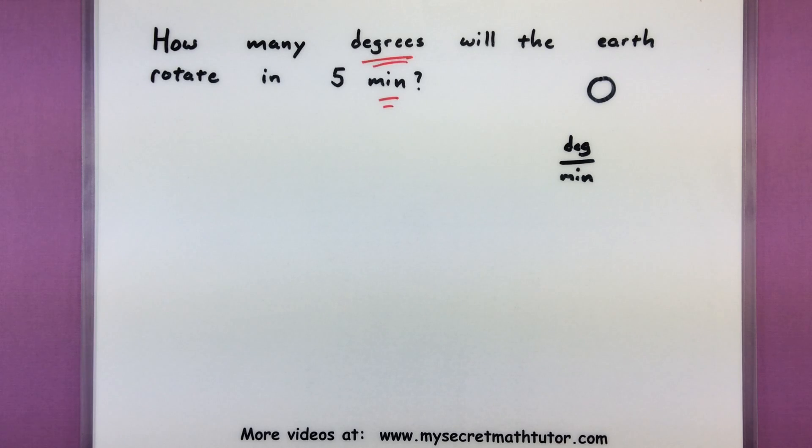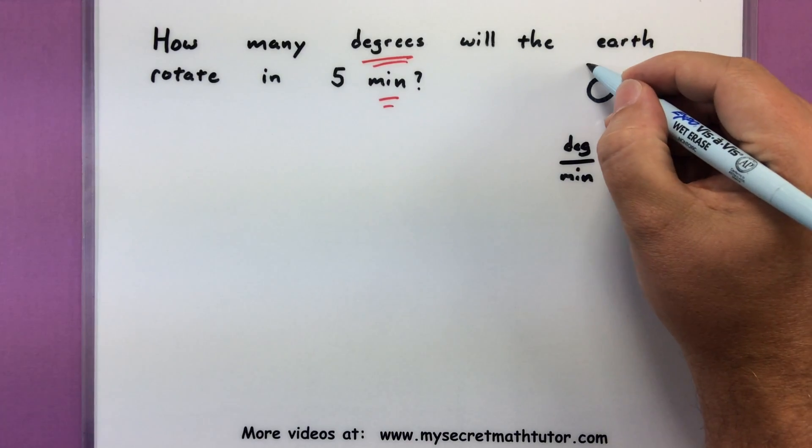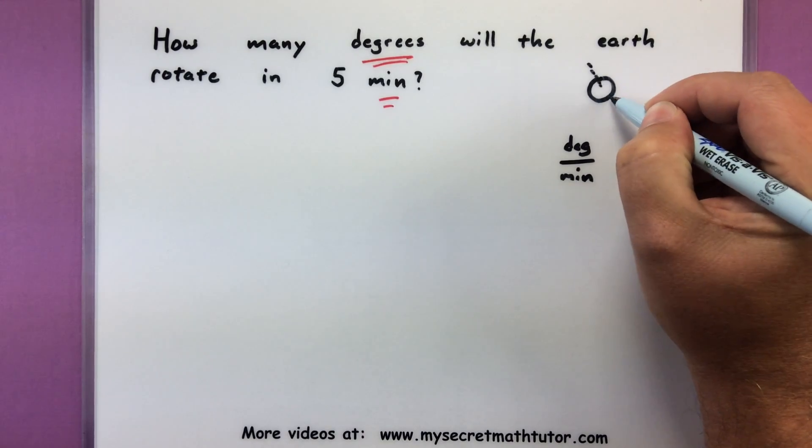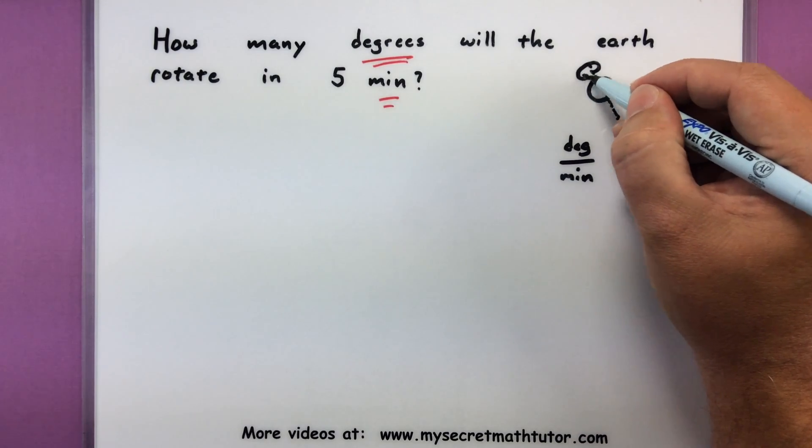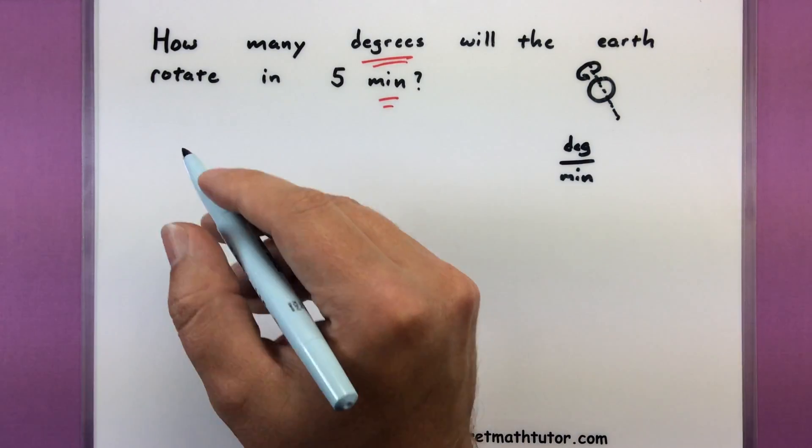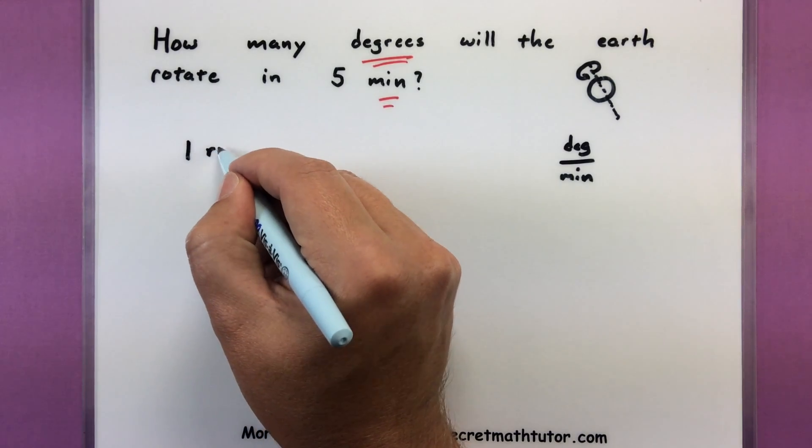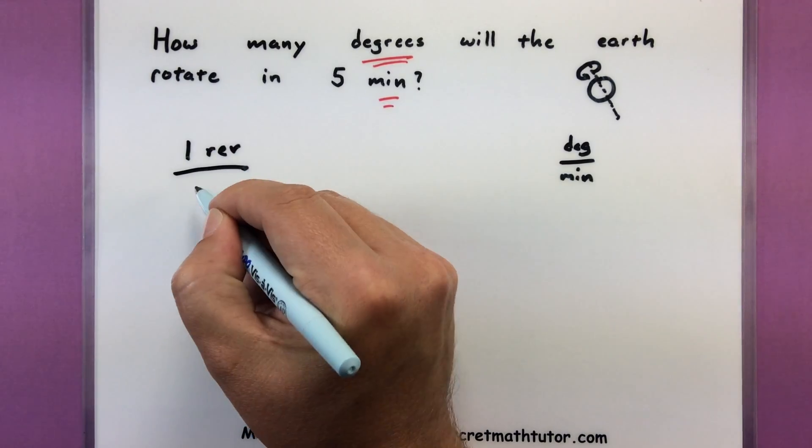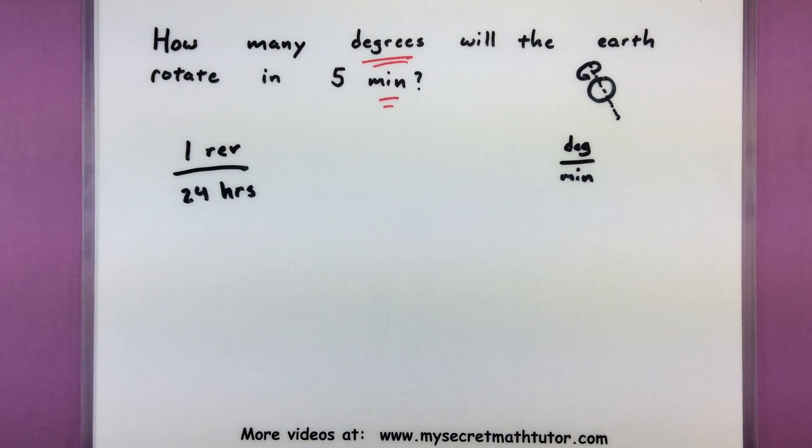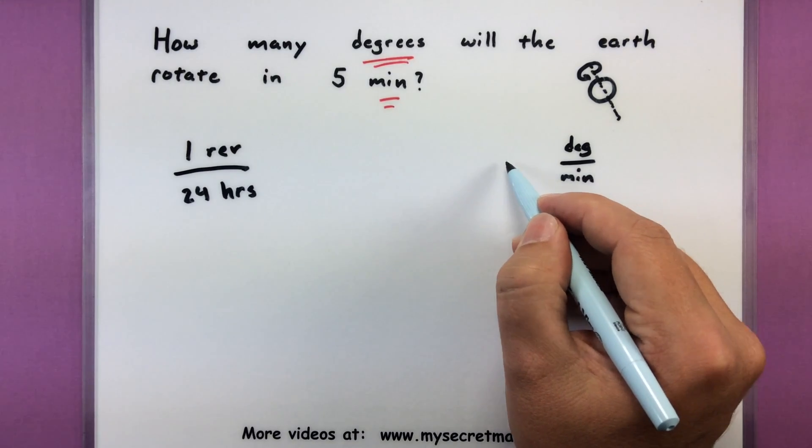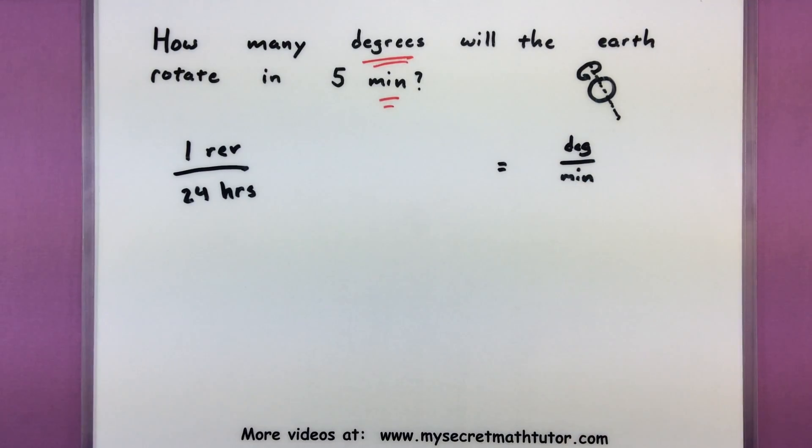Now what information am I giving? It doesn't say how much it actually turns in one hour or so. But if I think about the problem a little bit, I have a little bit of a clue how this is going to work. Since we're talking about the earth, we know that it will make one full rotation in about 24 hours. So I can say it makes one revolution over the course of 24 hours. So that's really what I'm given, and I want to use that to try and build into degrees per minute.